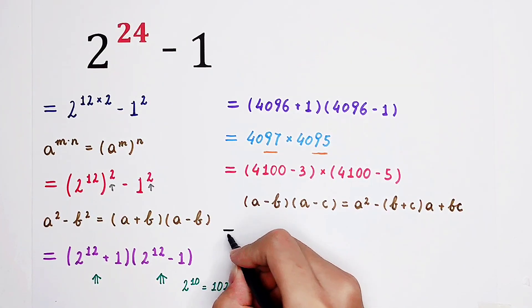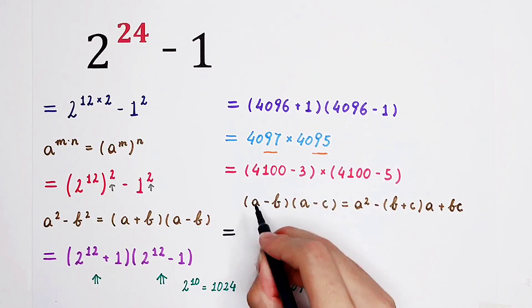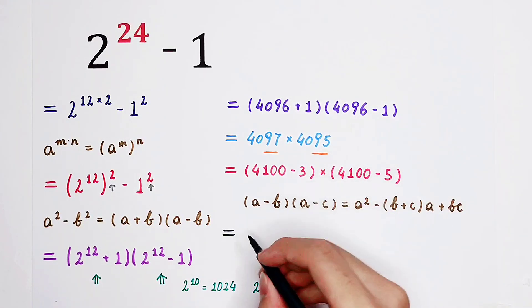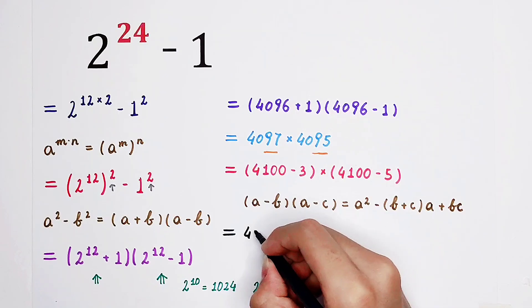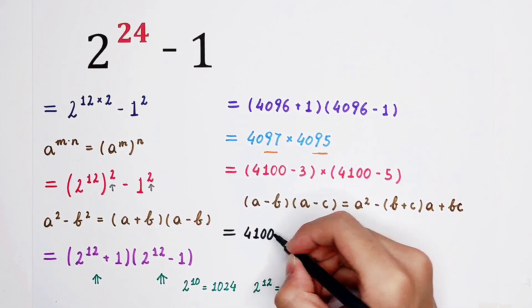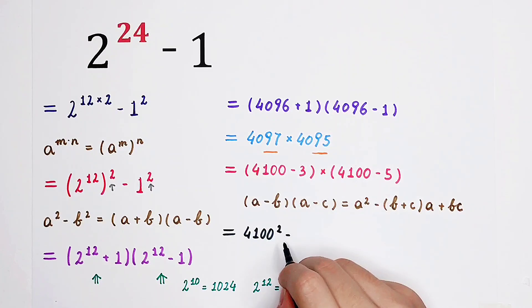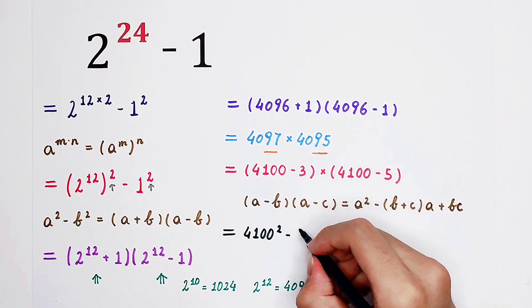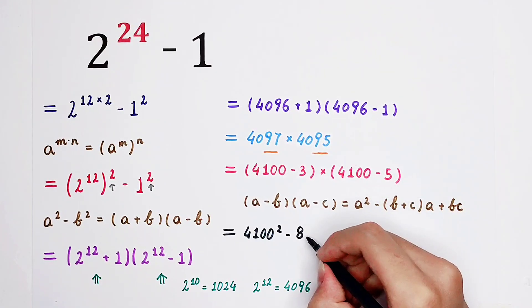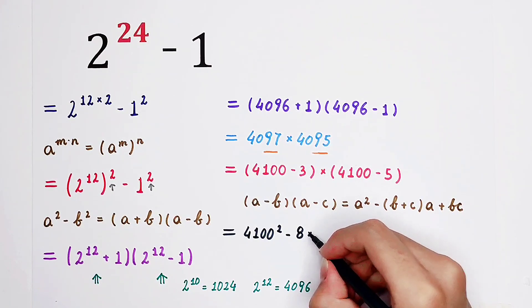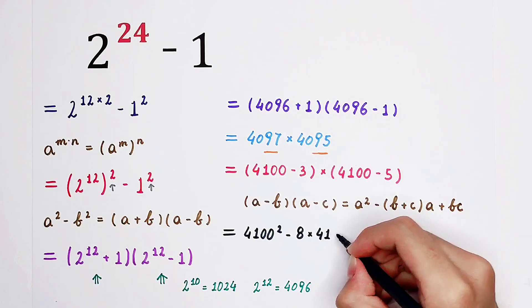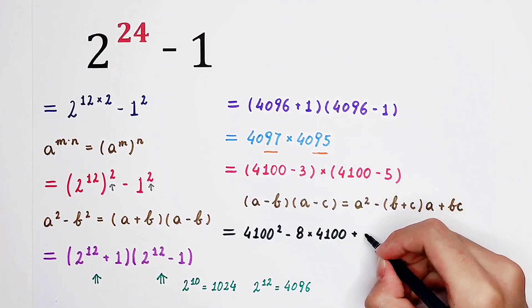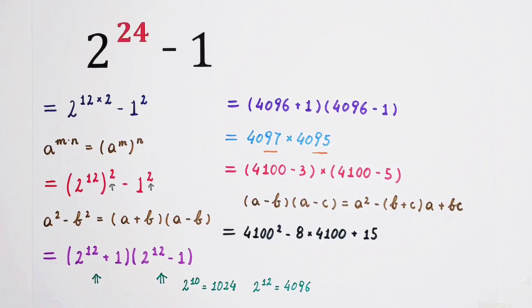By using this formula, a is 4100, b is 3, c is 5. It is 4100 squared, minus b plus c. Minus b plus c is 3 plus 5, it is 8. Then times 4100. And then plus b times c. It is 3 times 5 is 15.